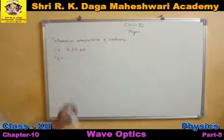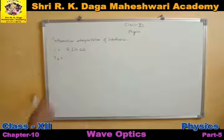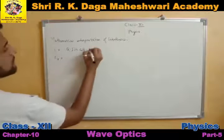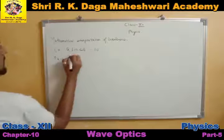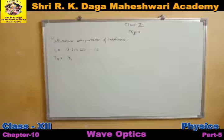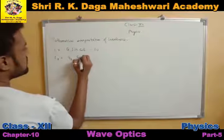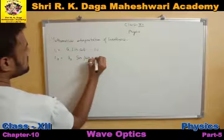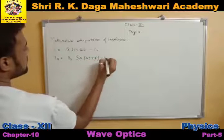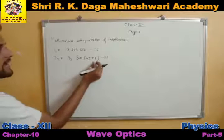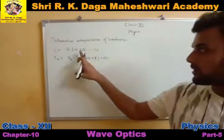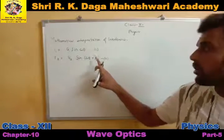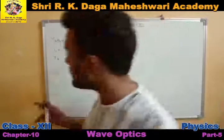For the first wave, let the amplitude be a1, so y1 = a1 sin(ωt). This is our first equation. Similarly, a2 is the amplitude of the second wave, so y2 = a2 sin(ωt + φ). This is the second wave equation, where φ is the phase difference between both the waves. Here ω is the phase, and φ is the phase difference between both waves.